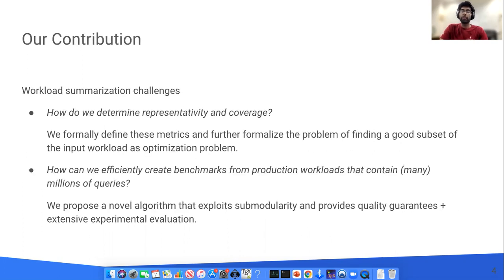The main contribution of the paper is the following. First, before we are able to generate a representative and high coverage workload, we formally define what these metrics are and formalize the problem of workload selection as an optimization problem. Second, we propose a novel algorithm that provides robust guarantees for the generated benchmark workload that works well in practice. Since the problem is hard, our algorithm finds an approximate workload that is close to the optimal solution. And finally, we perform an extensive empirical evaluation.